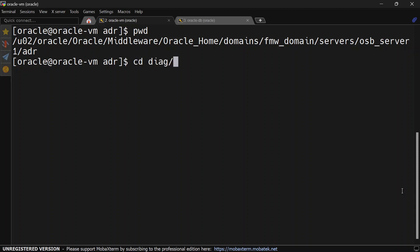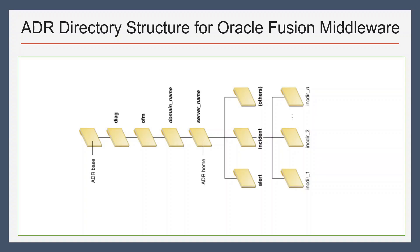Let's go to ADR home. We have the diagnostics folder, then OFM, then our domain folder. Inside that we can have multiple folders for different servers. Here we have the incident folder inside our server name, so whatever incidents are related to OSB Server 1 will be stored inside this folder. This is a diagrammatic view of the ADR file path hierarchy: ADR base, then the diagnostics folder, then OFM, then domain name, then server name — up to here is ADR home. Inside ADR home we have different folders like alert, incident, and many other folders for diagnostic dumps, with further sub-folders for different incidents.